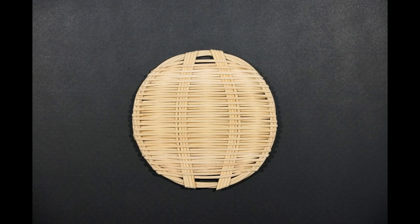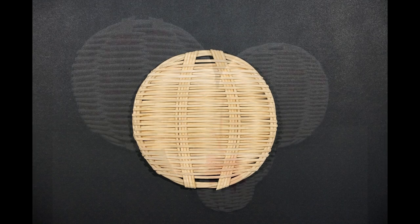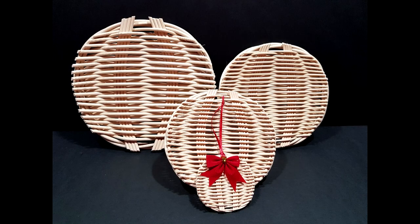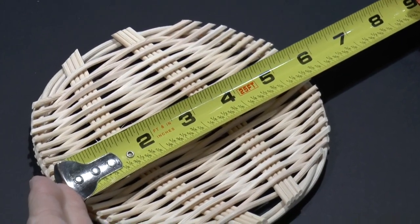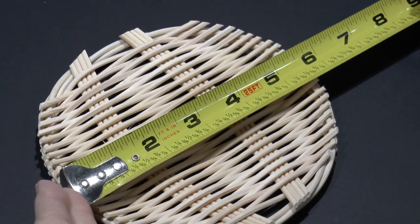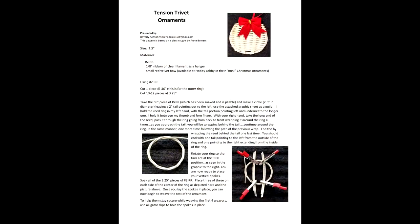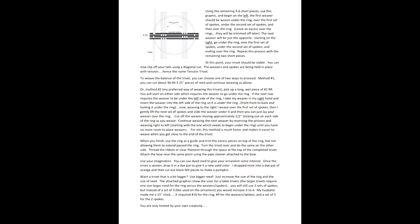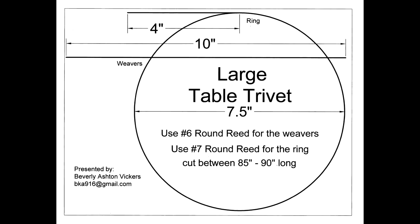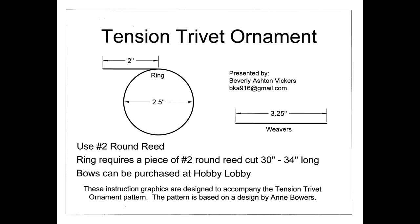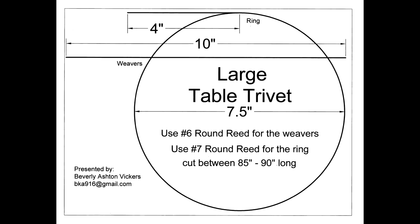You just vary the size of the reed and the number of pieces in the set of spokes. Some use different media, such as willow, to make them. For this video, we will weave the 5 1⁄2 inch reed trivet. I have written a pattern and created graphics to help make mini, small, medium, and large trivets, ranging from 2 1⁄2 to 7 1⁄2 inches in diameter.